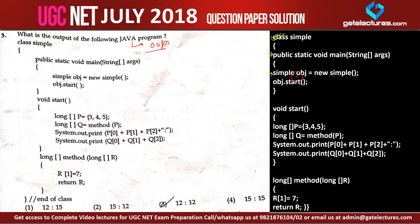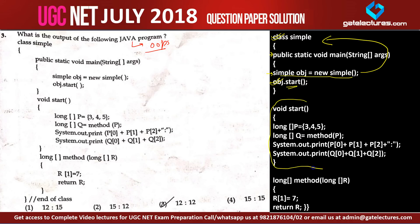In the main function we have created an object — Simple object of new Simple — that is an object of the same class type. Now we are calling object.start, so for this object we are calling the start function. In the main we are calling the start function on the same object. Now in the start function, we have a long array p.